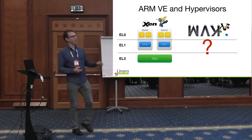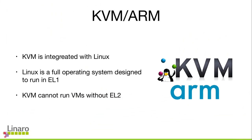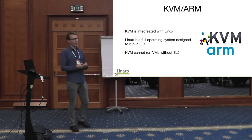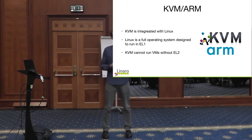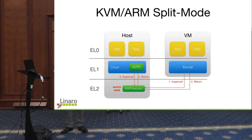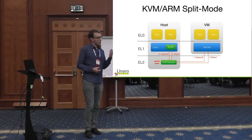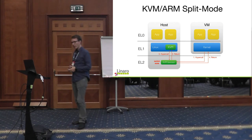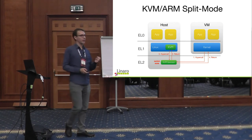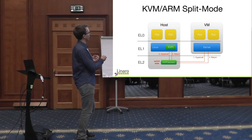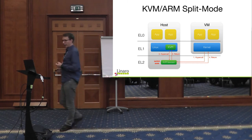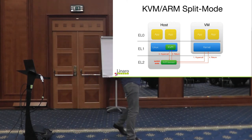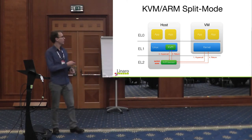For KVM we have to turn things upside down. KVM is integrated with Linux, a full operating system designed to run in EL1, and KVM can't run VMs on ARM without running something in EL2. So KVM uses split-mode virtualization, splitting execution of the hypervisor across both EL1 and EL2. An unfortunate side effect is that you're multiplexing EL1 state between the VM kernel and the host kernel in software, in the part of KVM running in EL2.